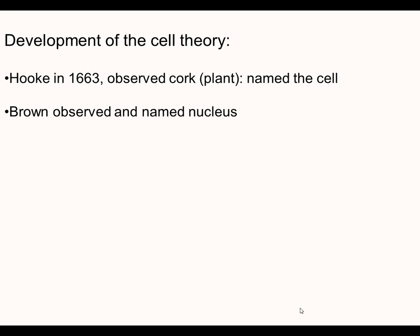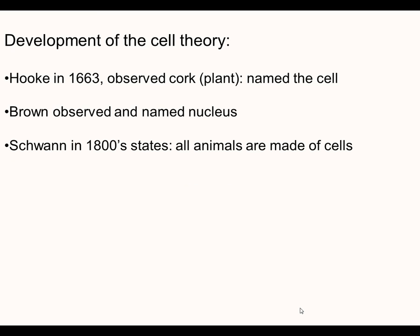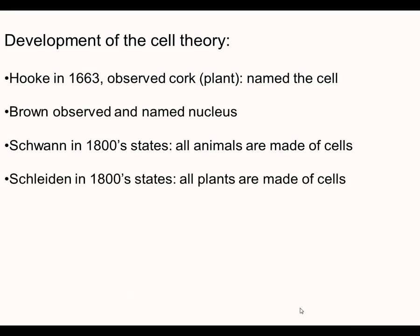The second scientist is Brown, and Brown was the first one to observe and name the nucleus, which is obviously an important contribution to the idea of cells. Then, as you saw in your cell quest, we had a scientist named Schwann, working in the 1800s. He said that all animals are made up of cells — basically stating that these are the basic structure and function, and that all living things have to have cells in order to be considered living.